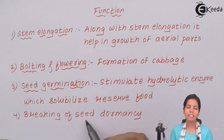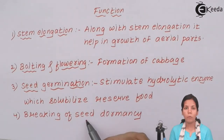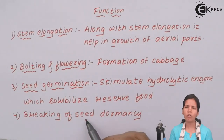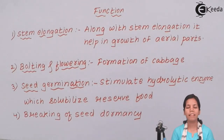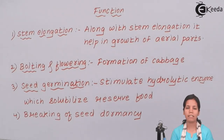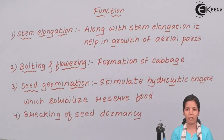Lastly, breaking of seed dormancy. When the seed is in the bud stage, gibberellic acid helps the plant to form the radicle or the initial short growth. So in this part of the chapter, we studied how gibberellic acid helps in various stages of plant growth, particularly during seed germination. I hope you are all clear about the functions of gibberellic acid.